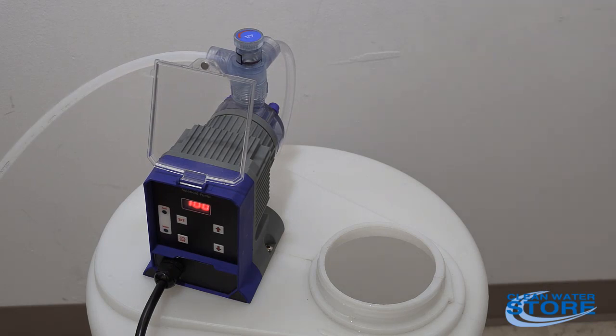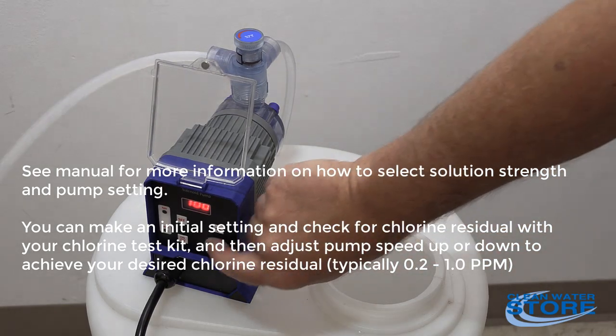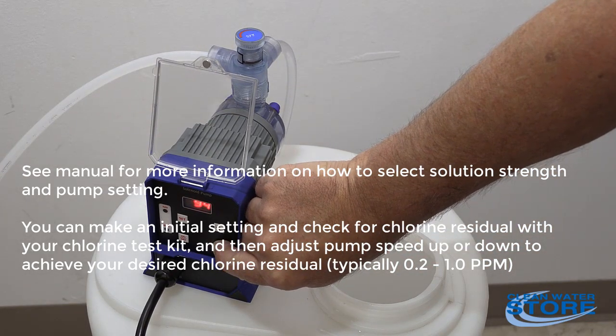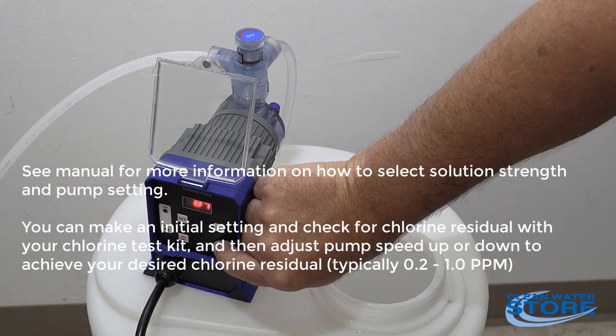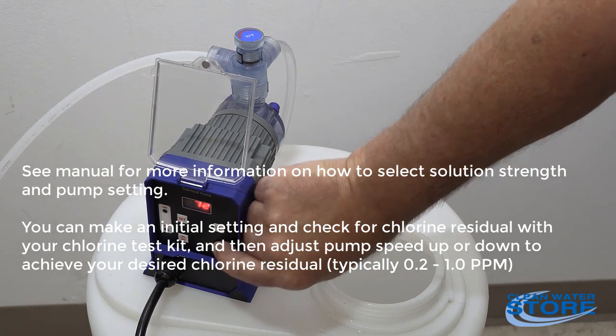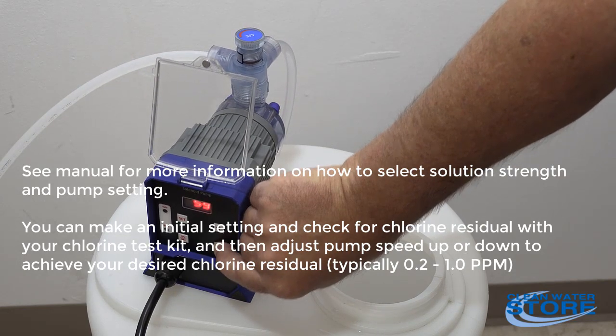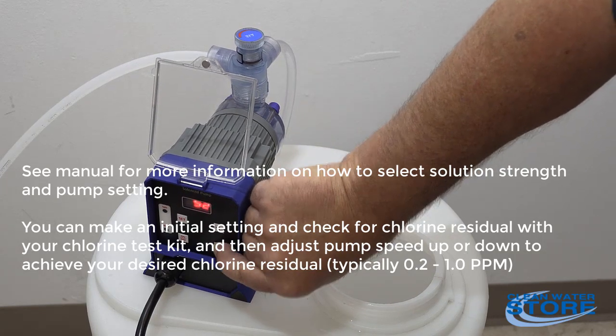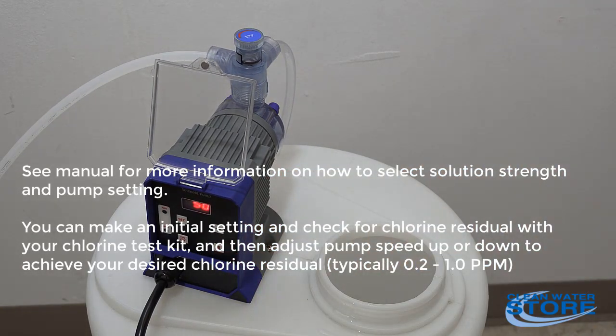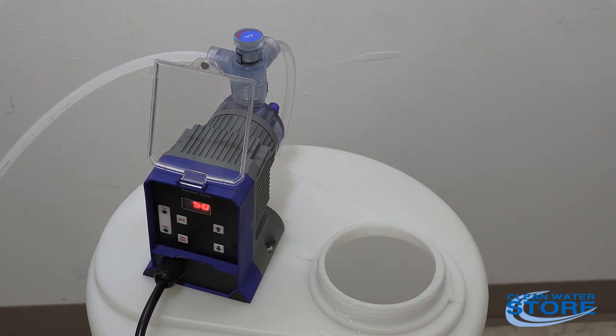At that point, once you get your solution in there, you're going to go ahead and adjust this down to 50%. And 50% is about where you're going to want to be if your well is producing between 5 and 15 gallons a minute. So set that at 50%, go ahead and run it for a bit, and then go ahead and follow your startup guide. Check your free chlorine. Get that somewhere between 0.2 and 0.4 ppm, and you will be good to go.